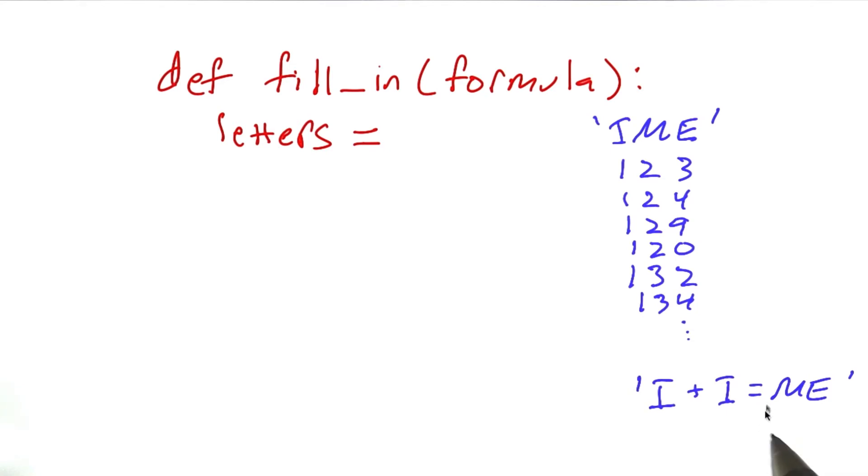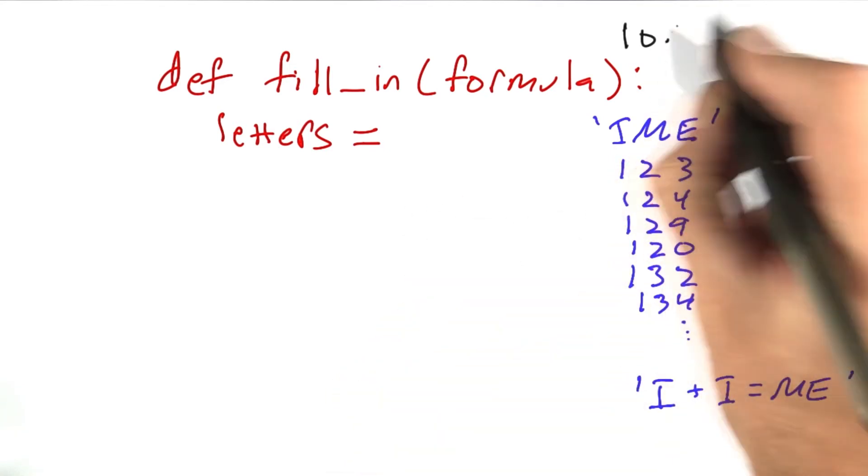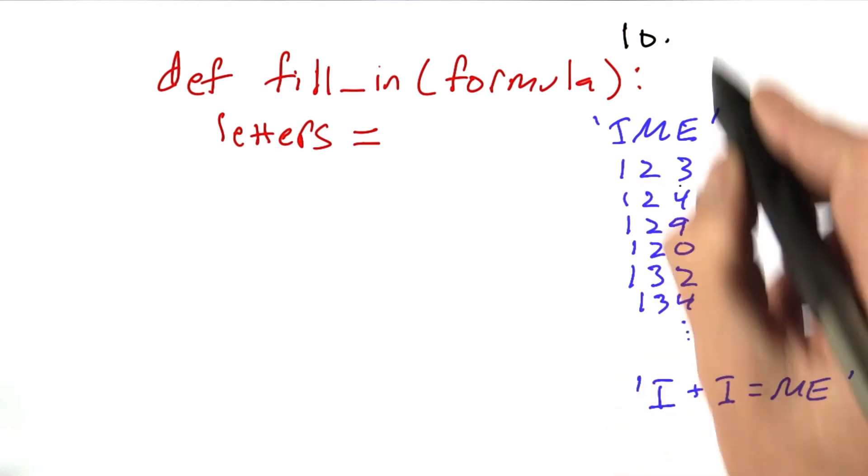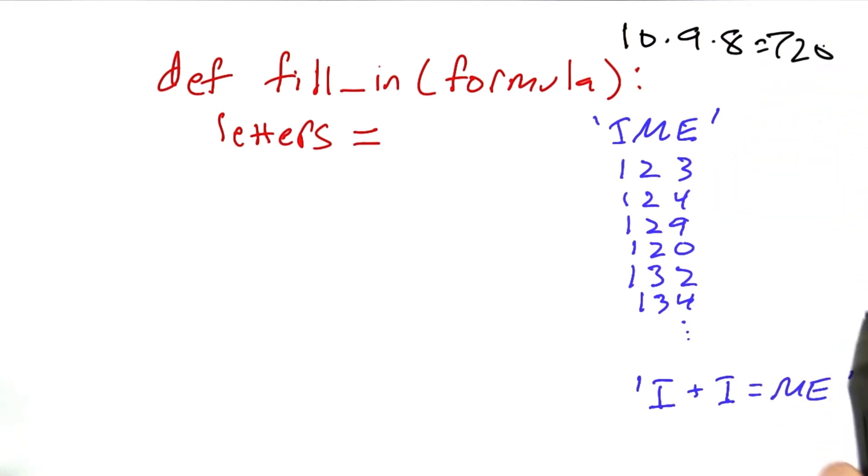How many possibilities are there? Well, there's 10 possible first digits, and then we don't want to repeat a digit, so 9 possible second digits and 8 possible third digits. So that's 720 possibilities. So not very many at all. It should be really fast to go through all these possibilities.